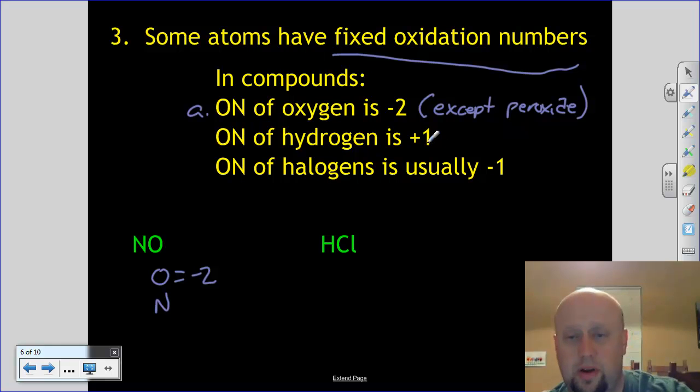The oxidation number of hydrogen is plus one. Now, there are exceptions to that as well. It could be in something called a metal hydride, in which case the metal has whatever its charge is, and then the hydrogen is usually negative one. But almost all the time when you get them, hydrogen is going to be plus one. So if we're trying to find oxidation numbers here, hydrogen plus one.